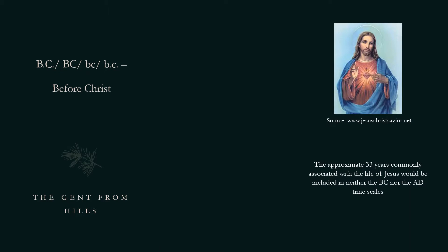BC and AD are two abbreviations which are used to denote the correct sequence of years. BC, written as capital B.C. or simply BC, means Before Christ. It is the number of years signified before the birth of Jesus Christ. The approximate 33 years commonly associated with the life of Jesus would be included in neither the BC nor the AD timescales.